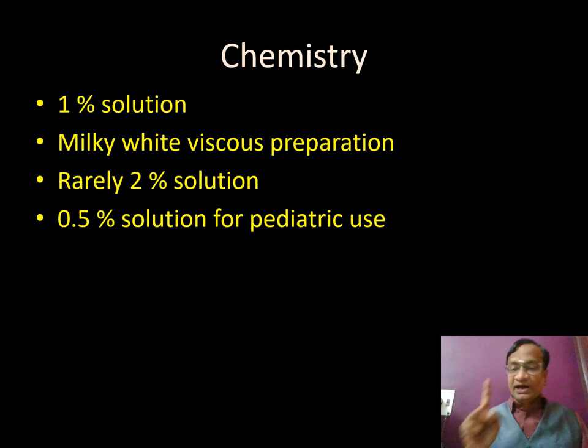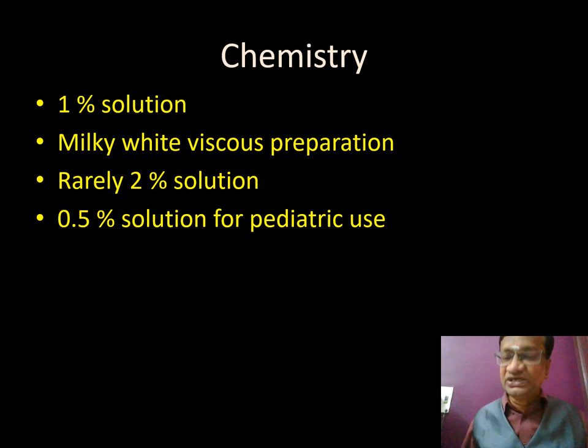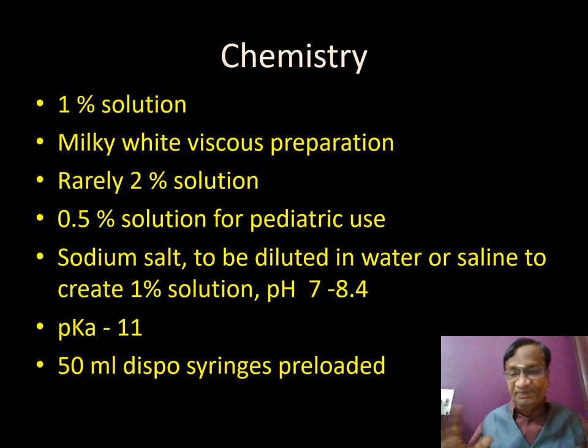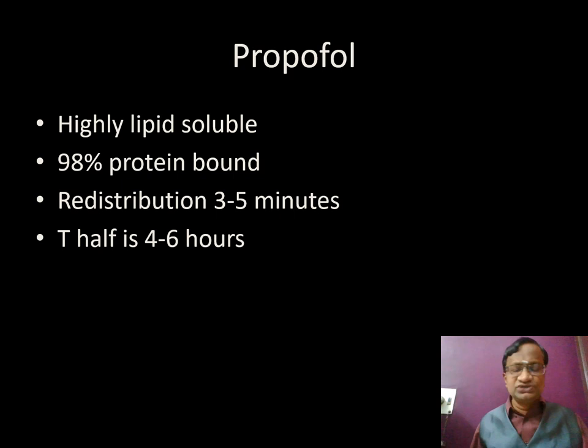Propofol is produced as a 10 mg/mL or 1% solution. Rarely, 2% solutions are available; 0.5% solutions exist for pediatric use only in specialist pediatric anesthesia institutions. The pH is 7 to 8.4, and the pKa is 11. 50 mL disposable pre-loaded syringes are also available. It is highly lipid-soluble, as it needs to target the brain.